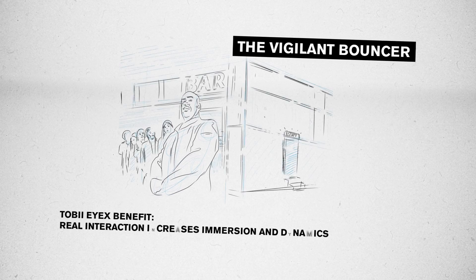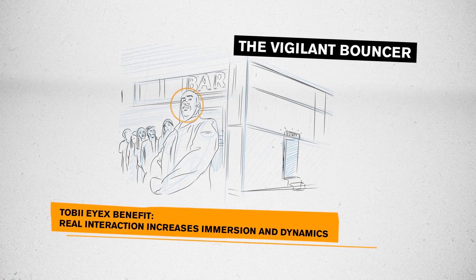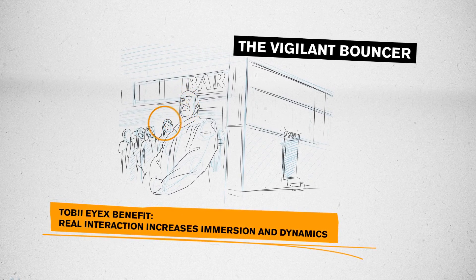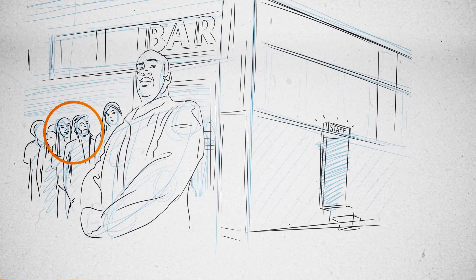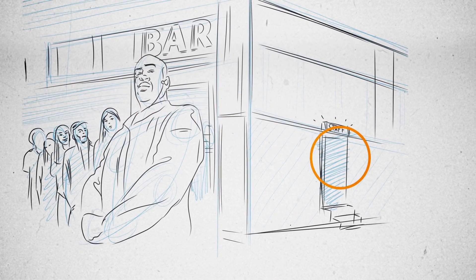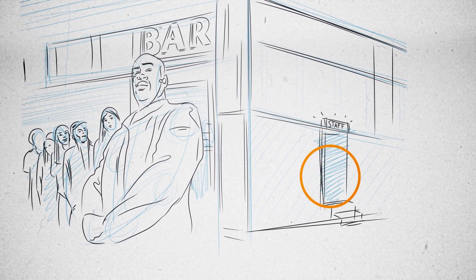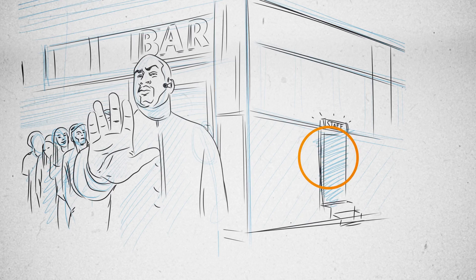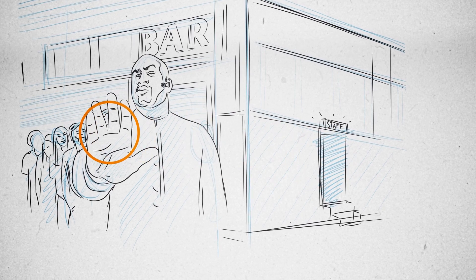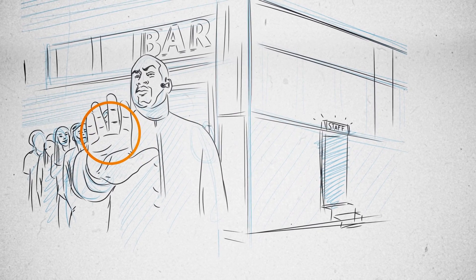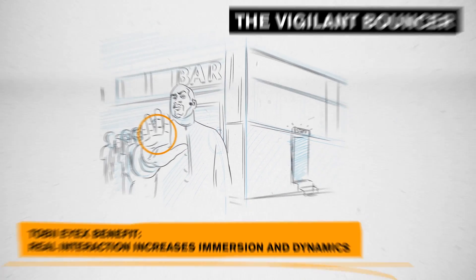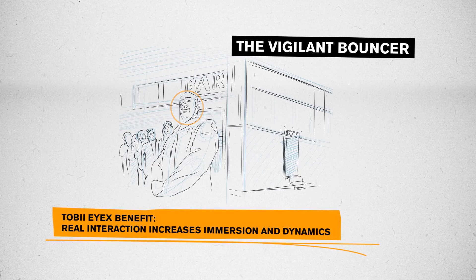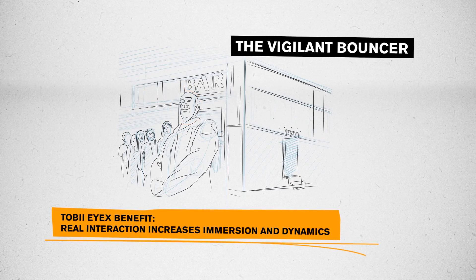The Vigilant Bouncer: The bouncer stops you at the bar entrance, so you are considering getting in through the back door. Just don't look at it for too long, or the bouncer will notice. With the ability to read you as a player, any character in a game can act more intelligently.